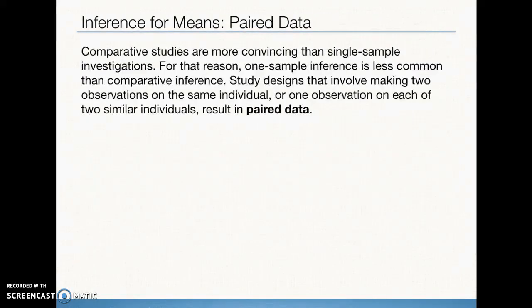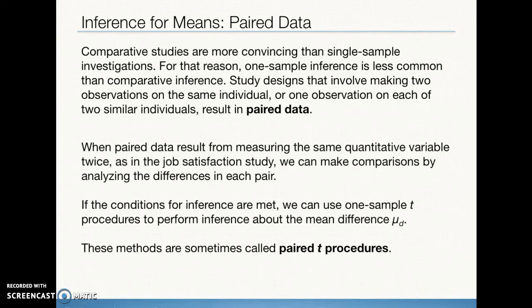Let's talk about paired data. Single sample studies are less common than comparative inference. Back in Chapter 4, we learned about matched pair design, where two observations were made on the same individual with different treatments or on very similar individuals — resulting in paired data. When paired data result from measuring the same quantitative variable twice, such as asking the same individual a job satisfaction survey, we analyze the differences in each pair. If conditions for inference are met, we can use a one-sample T procedure to perform inference about the mean difference. These methods are called paired T procedures.